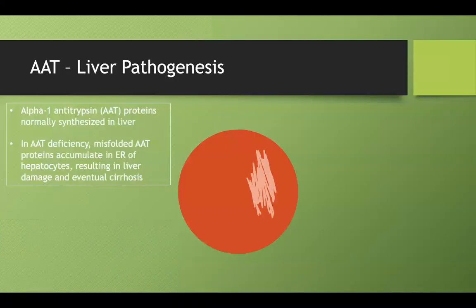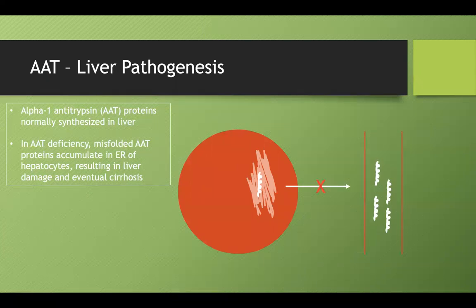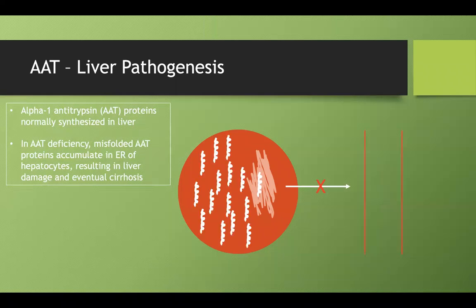To illustrate: normally, a hepatocyte can produce AAT proteins that get secreted into the bloodstream. In alpha-1 antitrypsin deficiency, however, we get misfolding of that protein, so it accumulates in the endoplasmic reticulum first and ultimately throughout the liver cells, causing liver damage and eventually cirrhosis.